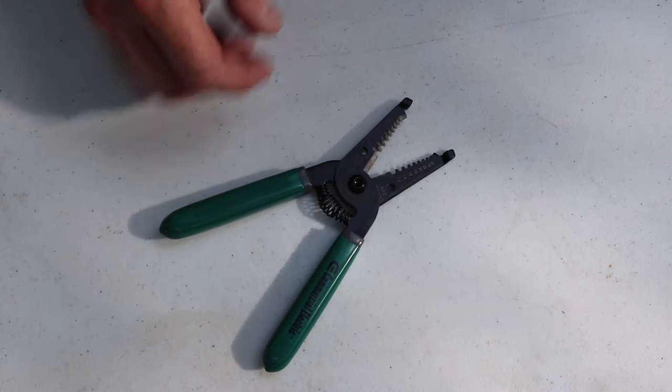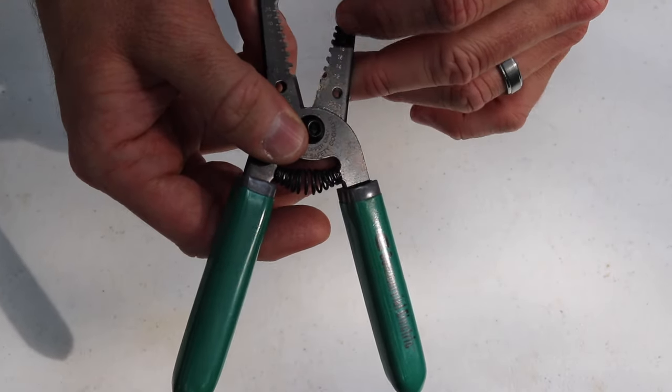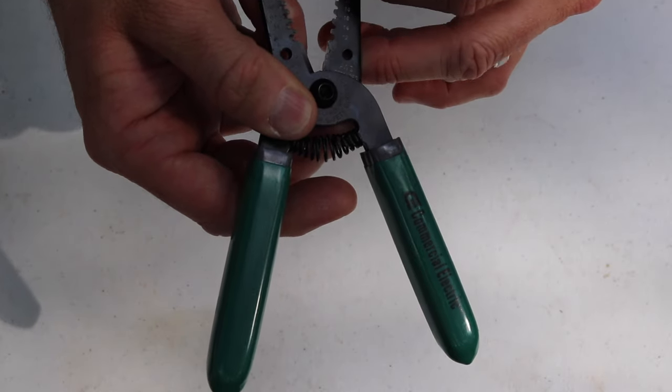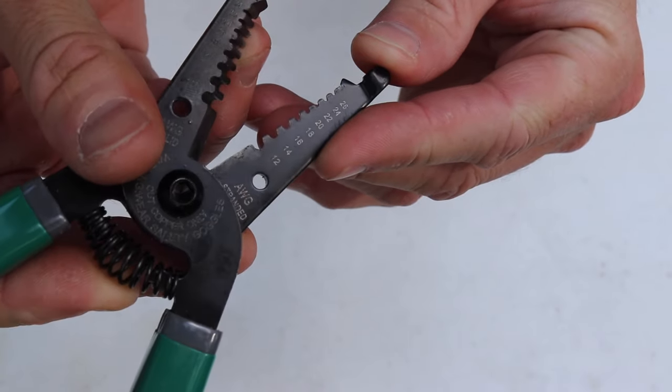You're going to need a decent set of wire cutters. This set has corresponding notches that go along with the wire gauge so you strip just the insulation and don't end up cutting the conductor.